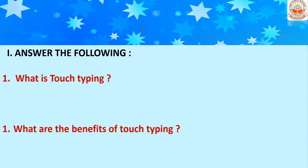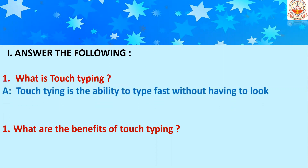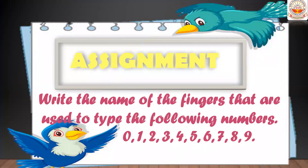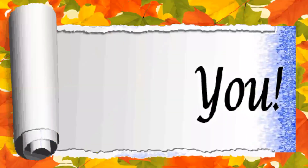Let's answer some review questions. What is touch typing? Touch typing is the ability to type fast without having to look at the keyboard. What are the benefits of touch typing? It increases typing speed and reduces errors. For your assignment, write the names of the fingers used to type each of the following numbers: 0, 1, 2, 3, 4, 5, 6, 7, 8, and 9. Thank you and have a nice day.